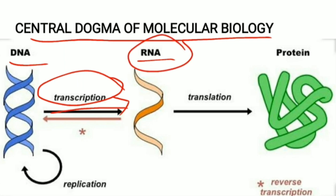RNA acts as a better messenger, and that is the reason behind the occurrence of transcription. Transcription is a process where the information present in the DNA is transcribed into RNA in the form of codons. Codons are combinations of any three nitrogen bases, and these codons are decoded by the adapted tRNA molecules, which add amino acids according to the codons present on the mRNA.